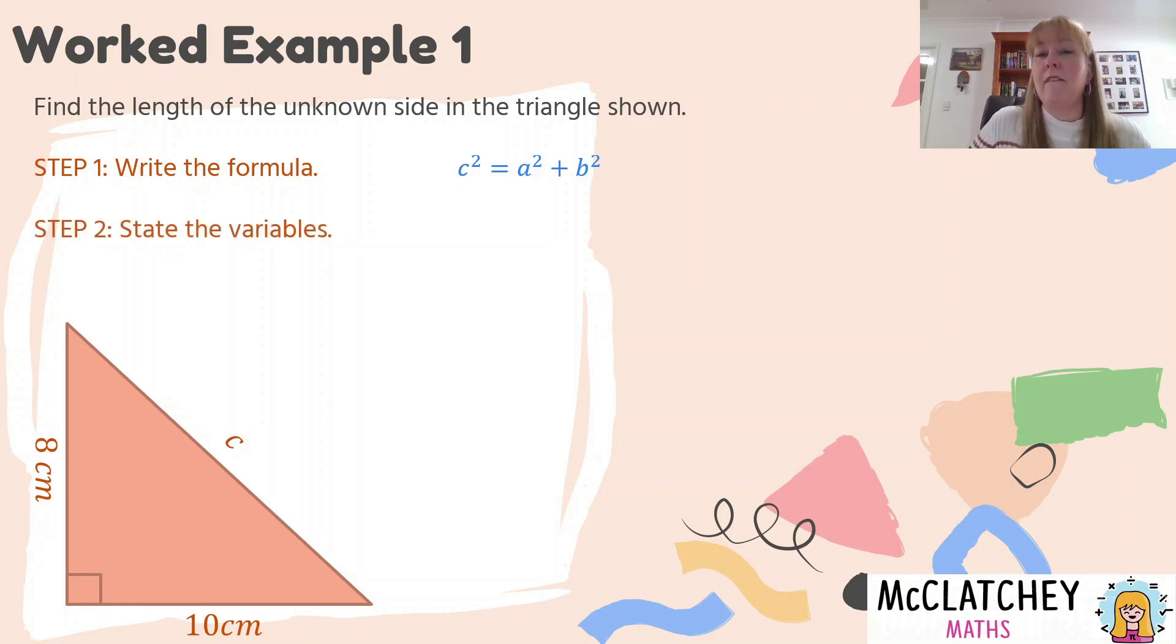Okay, so we've written our formula now. Step two is we're going to state what our variables are. And this is often a step that people skip as well in the interest of laziness and saving time. But sometimes stating variables is actually awarded marks in exams. So it's really important that you state your variables. We know that a is equal to eight, we've just labeled it a, and b, we're going to call b ten centimetres. We're trying to find c. So c is our unknown.